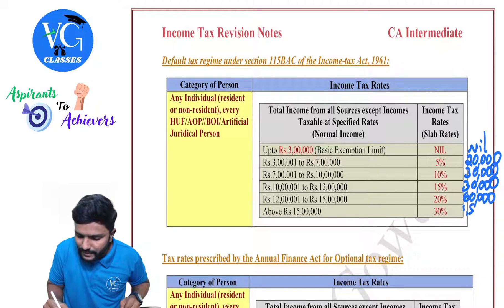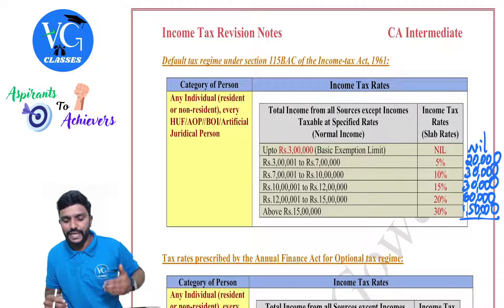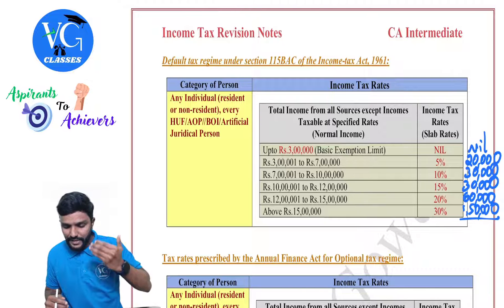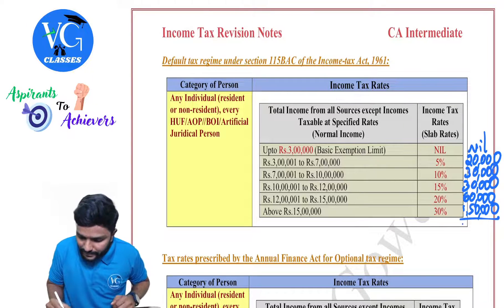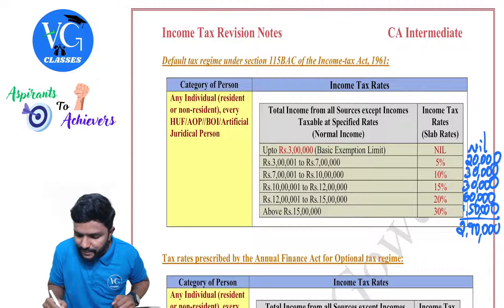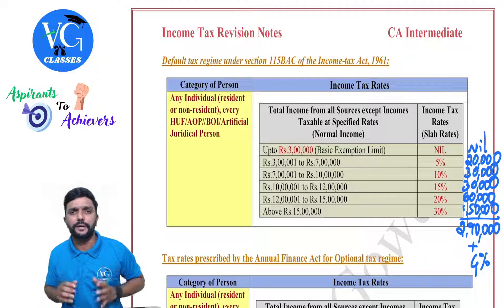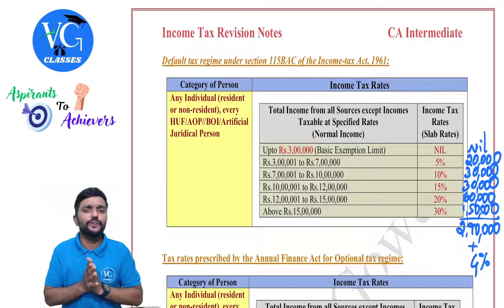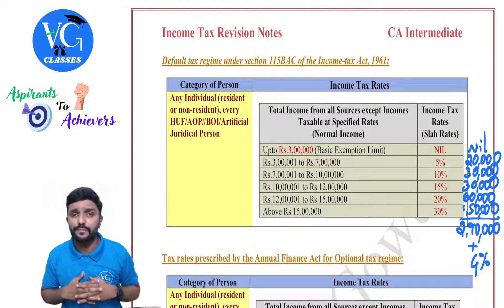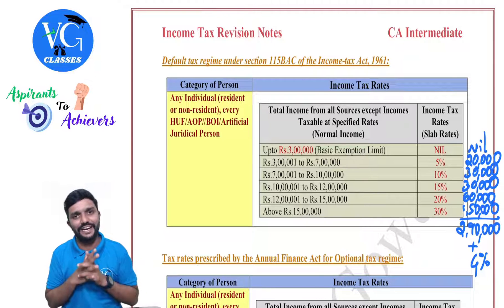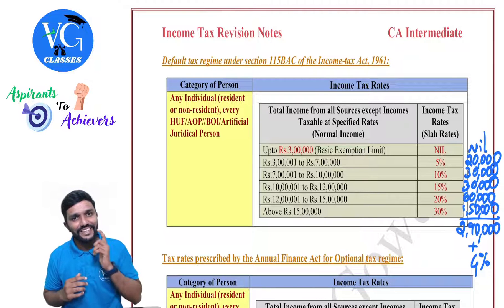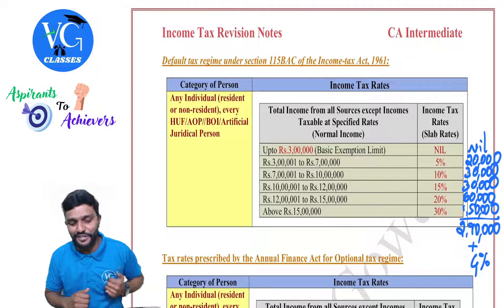So this will be our gross tax liability — 2 lakh 90,000. For this, we have to add 4% health and education cess and pay it. Please be careful: no rebate is available here. No surcharge is applicable as the total income is less than 50 lakh. This is the tax rate under the default regime.